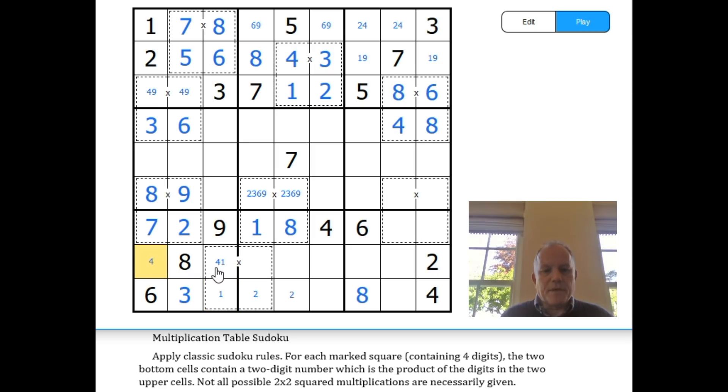There must be a one at the start of these, and the same logic applies: one cannot be in the top row of these cages because it would multiply to give a single-digit product. So the one is down here, and these must be four and five.